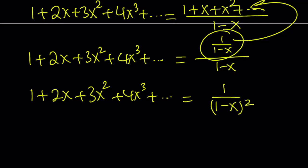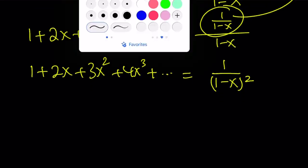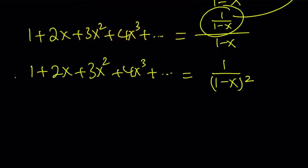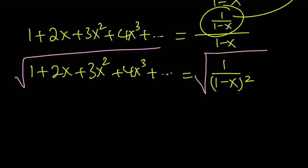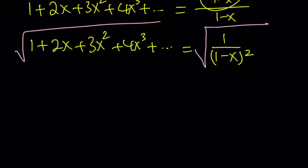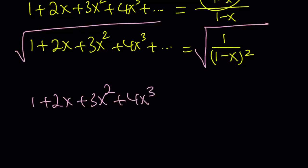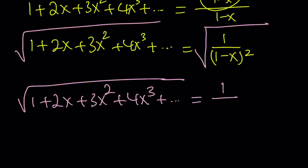We are trying to square root both sides. When we do that, we get the square root of a perfect square. Since x is less than 1, that quantity is positive, so the absolute value doesn't change anything. Our expression, the stuff we're looking for, is going to be 1 over 1 minus x.